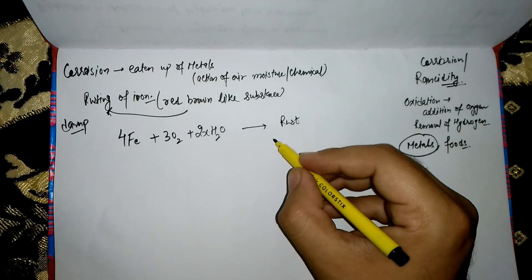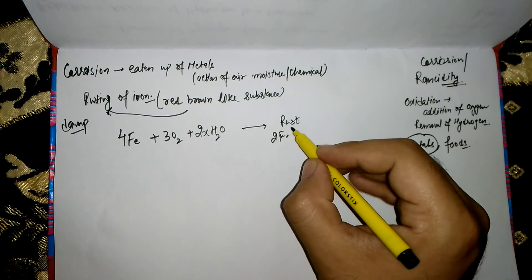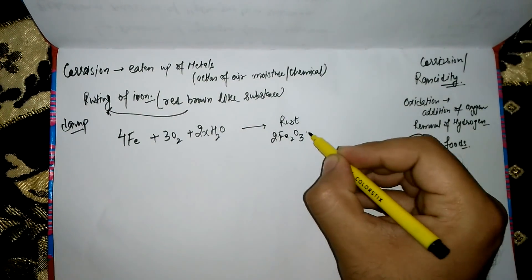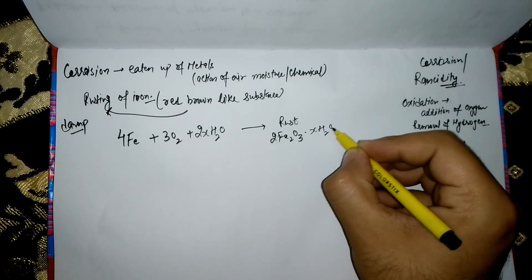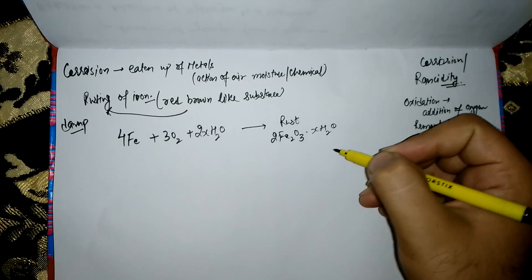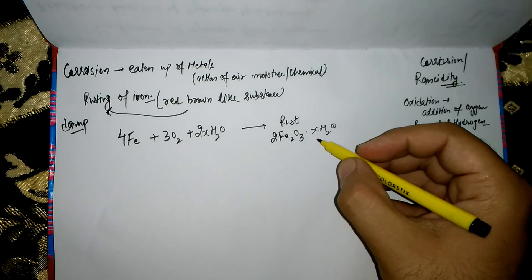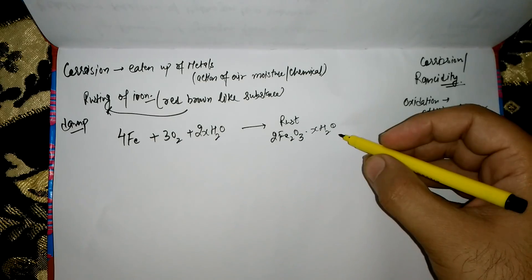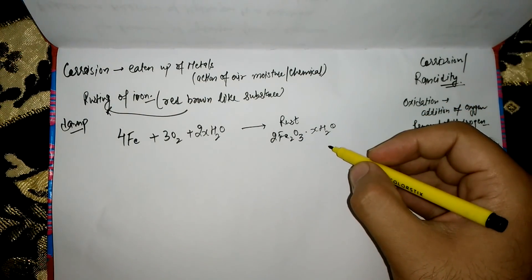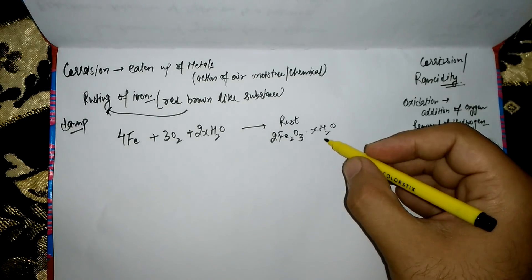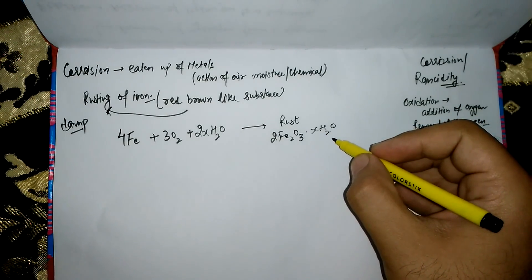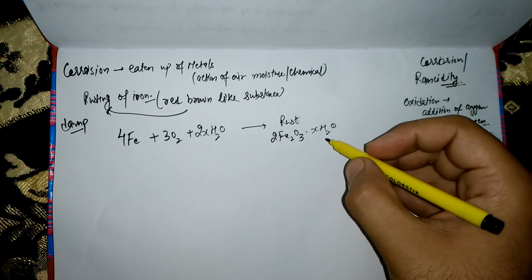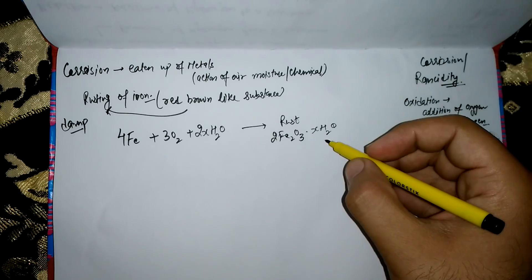The formula for rust is Fe·xH₂O, where x represents the water molecules, which vary with the condition. Rust is basically a soft, porous substance which gradually falls off from the surface of the iron object, and then the iron below starts rusting as well.